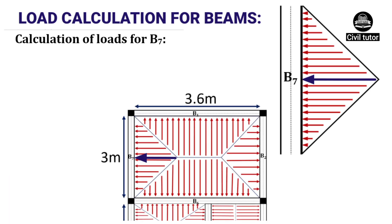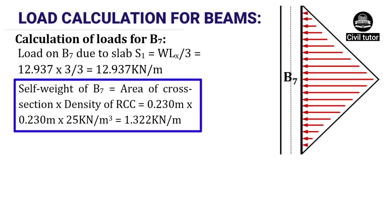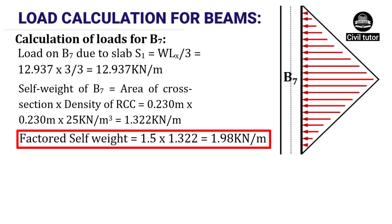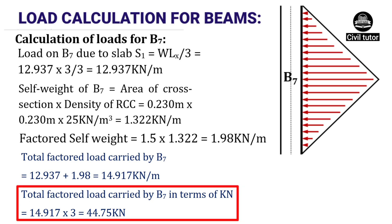Beam B7 carries the left triangular portion of slab S1, given by W·Lx/3, where W = 12.937 kN/m² and Lx = 3 m. The load on B7 due to S1 = 12.937 kN/m. Self weight = 1.322 kN/m and factored self weight = 1.98 kN/m. Total factored load on B7 = 14.917 kN/m. In kN: 14.917 × 3 m = 44.75 kN.